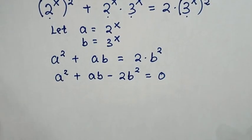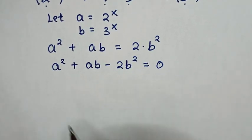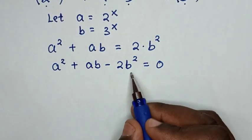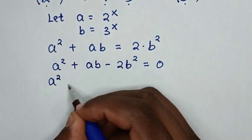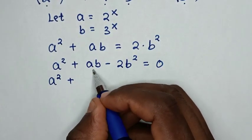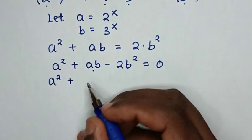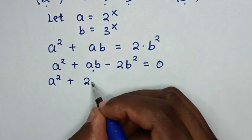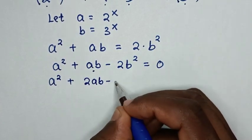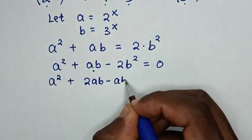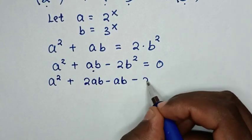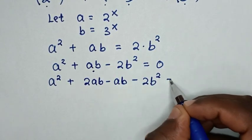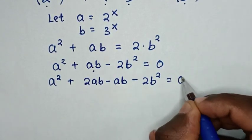In the next step, we solve this quadratic equation by factorization. We split ab as 2ab minus ab, so the equation becomes a squared plus 2ab minus ab minus 2b squared equals 0.